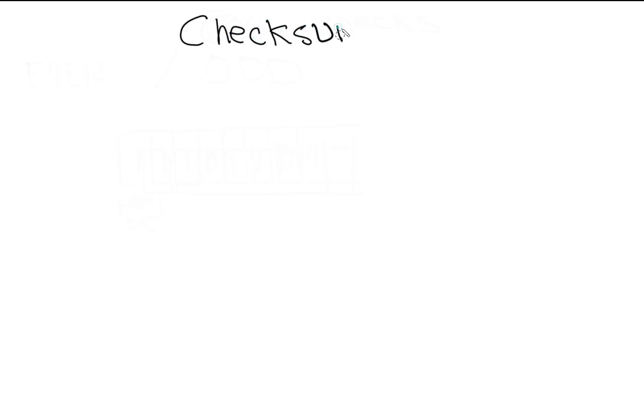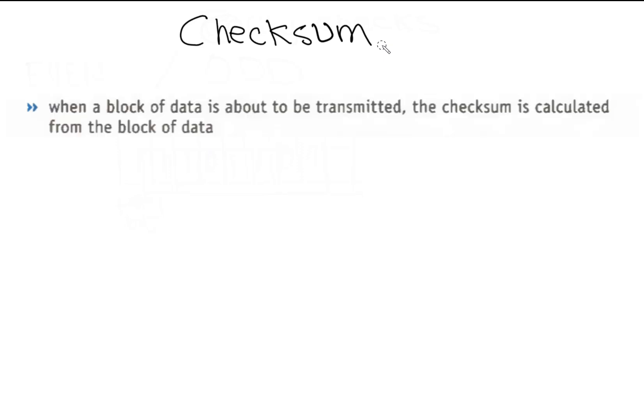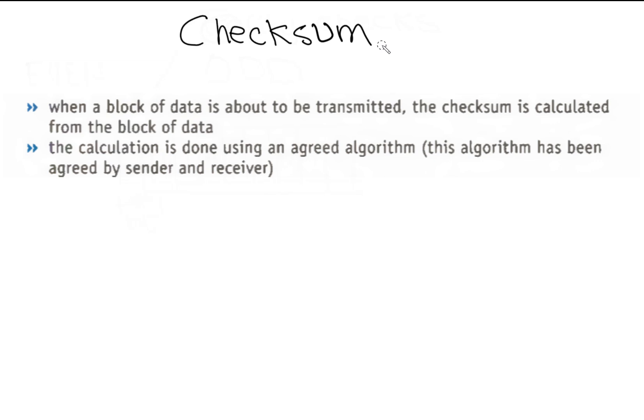Now let's talk about checksum. A checksum is a method used to check if data has been changed or corrupted following data transmission. Data is sent in blocks, and an additional value called a checksum is sent at the end of the block of data. When a block of data is about to be transmitted, the checksum is calculated from the block of data using an agreed algorithm that has been agreed upon by sender and receiver.